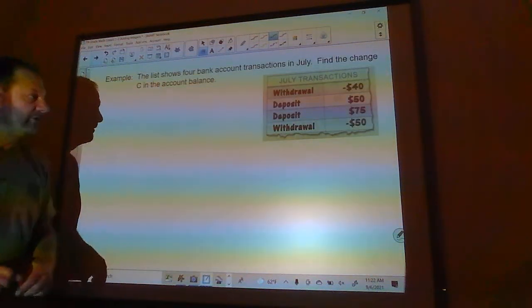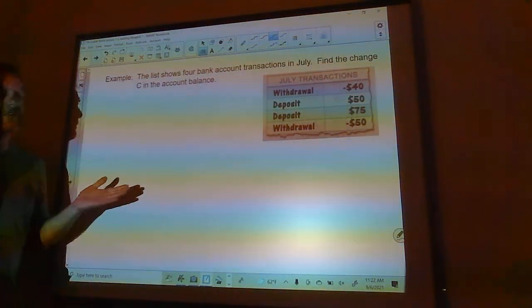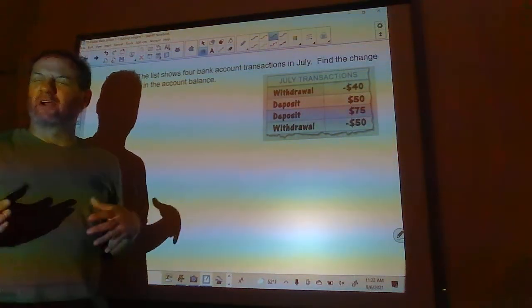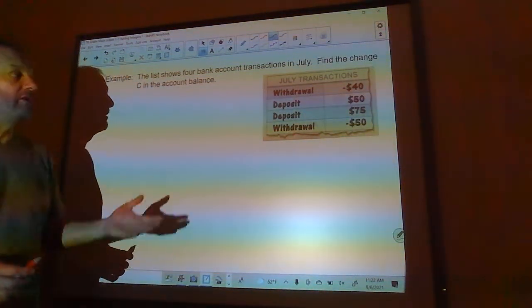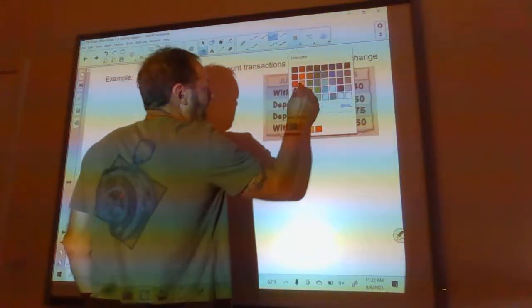Okay, here we have a little story problem. It says the list shows four bank account balances in July. Find the change C in the account balance. So the problem is we don't know where we started, but it doesn't really matter. I don't need to know where I started and I don't need to know where I ended, because I'm trying to find the change.